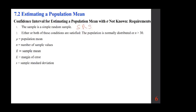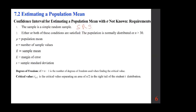Mu is the population mean, n is the number of sample values, x-bar is the sample mean, E is the margin of error, and S is the sample standard deviation. We use degrees of freedom df = n − 1 when finding the critical value. When sigma is missing, instead of z-alpha/2 we use t-alpha/2, separating an area of alpha/2 in each tail — the student t-distribution.